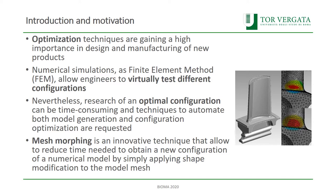Optimization is gaining more and more interest because we want to have better performance, lighter parts, and save resources. Numerical simulation allows us to virtually test different configurations. Despite this power, it's very difficult to get to an optimal shape because this operation can be time-consuming, and automation is highly desirable. Mesh morphing is an innovative technique that allows updating the shape of your CAE model — in this case an FEA model — so that shape variations can be quickly explored.